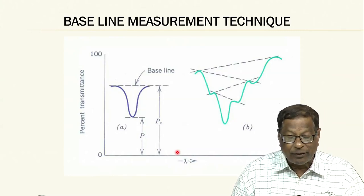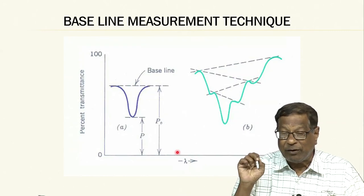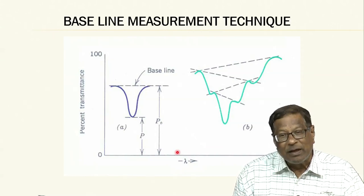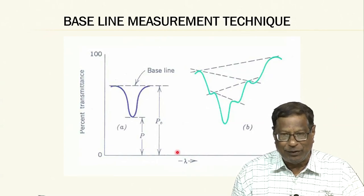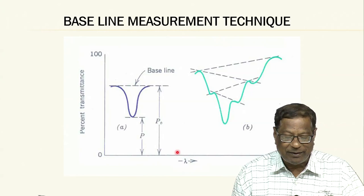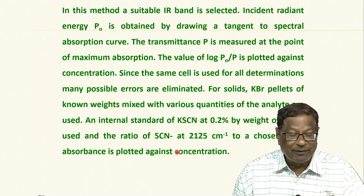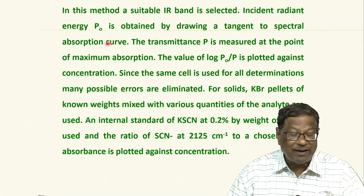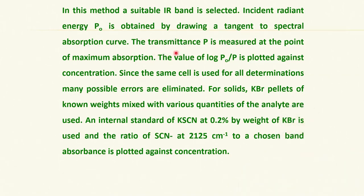IR analysis, you have to take different concentrations, weigh them accurately, and then take the IR spectrum and then correlate to the absorbents, draw a separate plot, and then determine the unknown. It is quite a bit complicated but it can be done. In this method a suitable IR band is selected. Incident radiant energy P naught is obtained by drawing a tangent. Transmittance is measured. Log P naught by P is plotted against concentration. Same cell is used for all determinations. Many possible errors are eliminated. For solids we have to weigh the KBr also because we are going to make the KBr pellets.